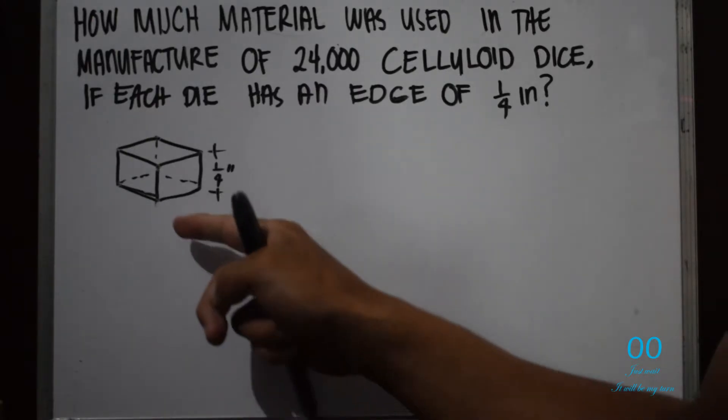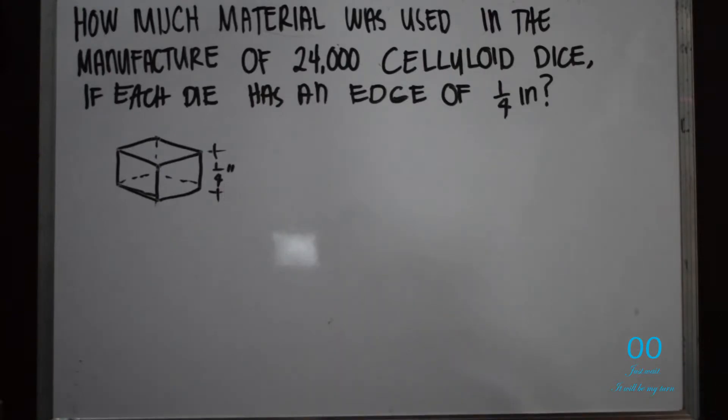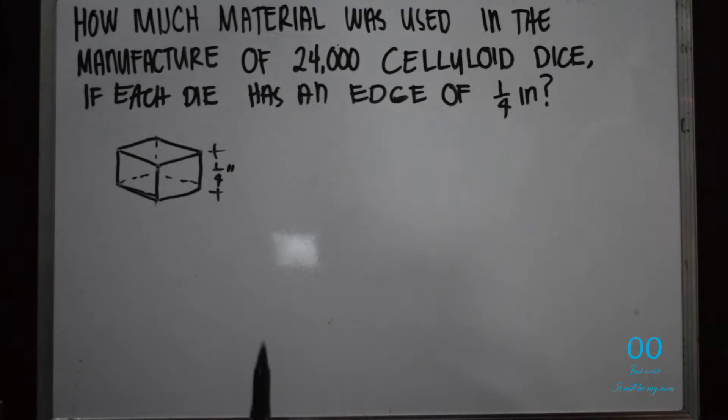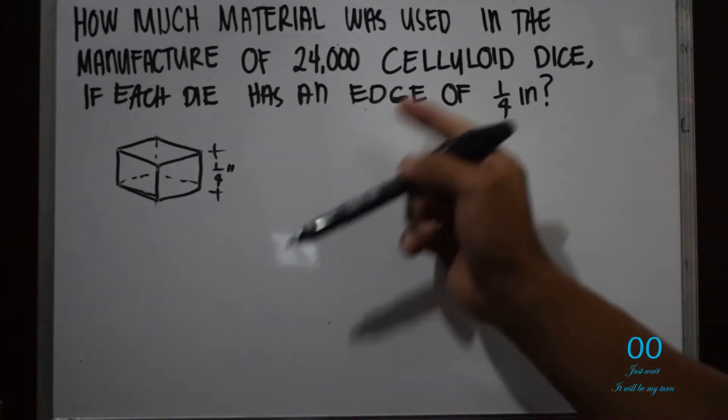Okay, so to calculate the total material used we can just get the volume of one dice and multiply it by the number of dice that we need to create. So there are 24,000.